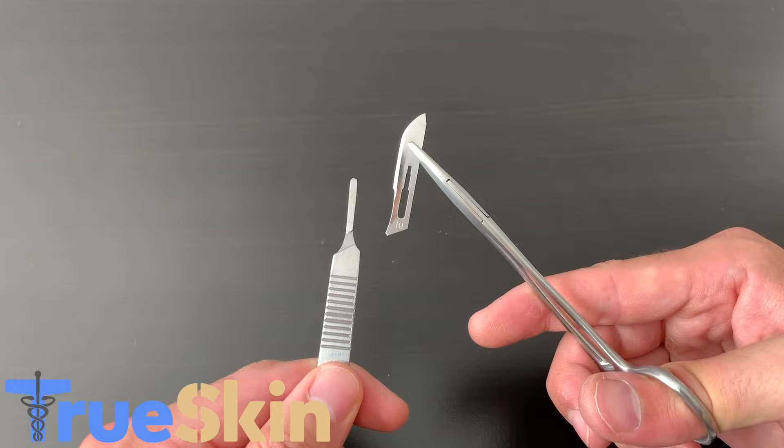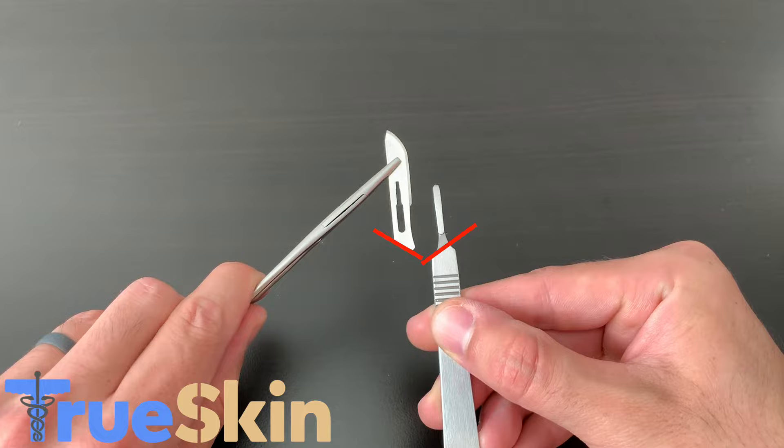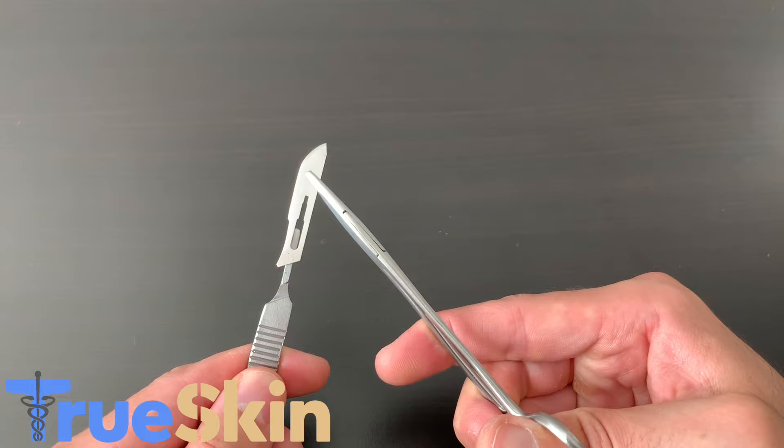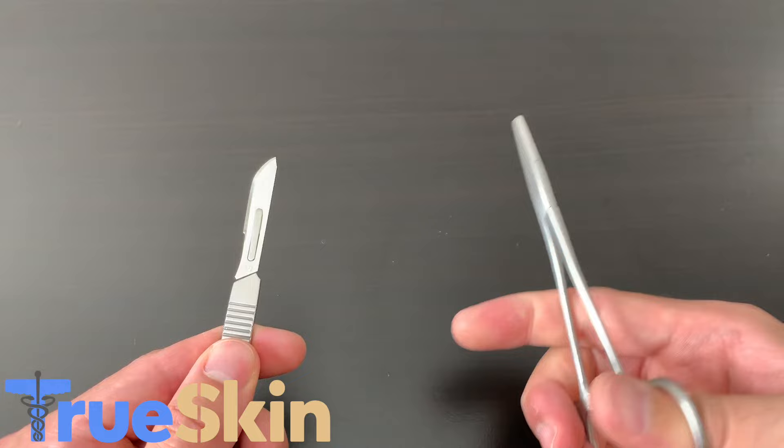If you have it the wrong way, you'll notice that the angles are not aligned and it won't fit. Once you have it the right way, go ahead and slide the handle into the slot. Once it's on the tracks, slide all the way down until it clicks. Now you have a secured blade ready for use.